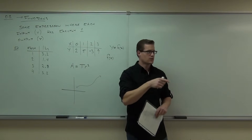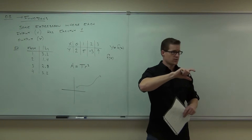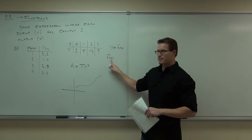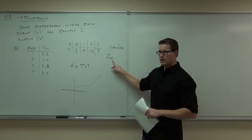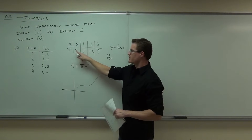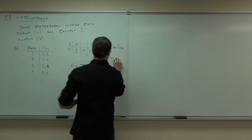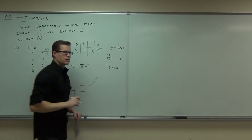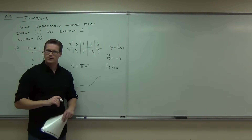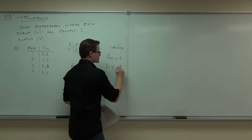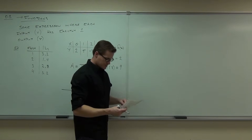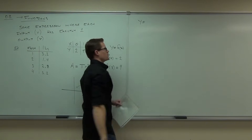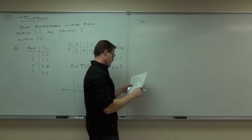F(0) equals 2, because you go to your x, find 0, and tell me what the output is — it's 2. How about f(3)? You go to your input of 3 and find what the output was. We'll typically use this notation in situations where you have some sort of equation.